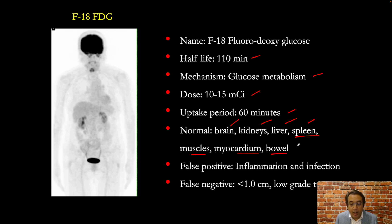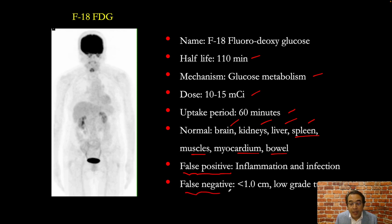False positives occur when we see focal hypermetabolism but there is no cancer — this can happen with inflammation or infection. False negatives occur when there is cancer but we don't see focal hypermetabolism, which happens when the tumor is too small (less than one centimeter in size) or it's a low-grade malignancy.